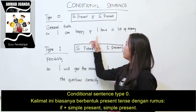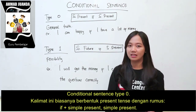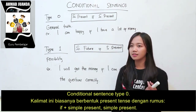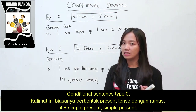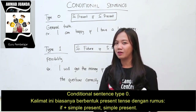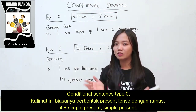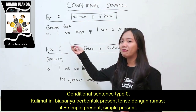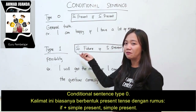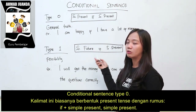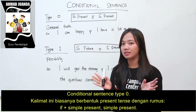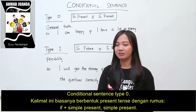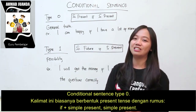Contoh: I'm happy if I have a lot of money. Saya senang kalau saya punya banyak uang — itu pasti kebenaran umum, semua orang juga pasti senang kalau punya banyak uang. Atau juga bisa: Everybody is sad if they lose their money. Semua orang pasti sedih kalau kehilangan uangnya. Kebenaran umum — itu kita harus pakainya type 0.